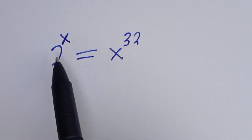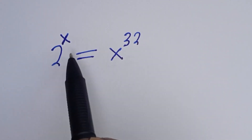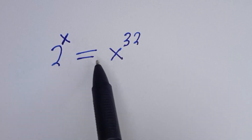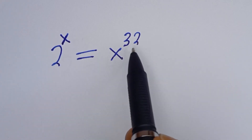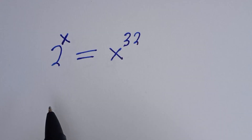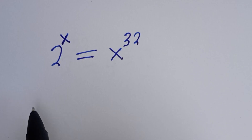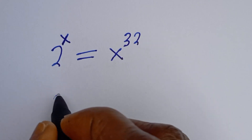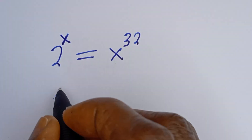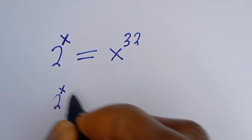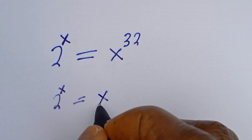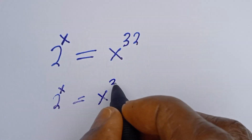Hello! How to solve for s in this beautiful equation: 2 to the power of s is equal to s to the power of 32.